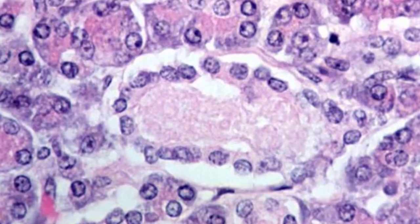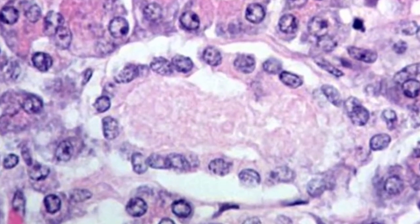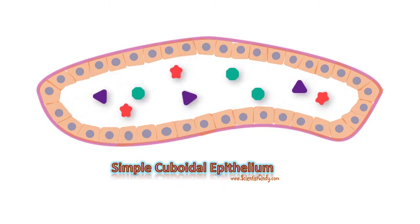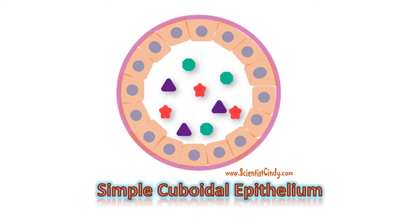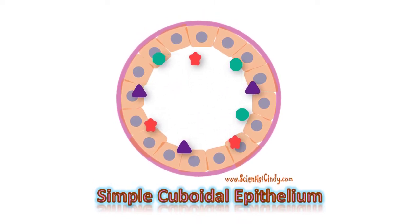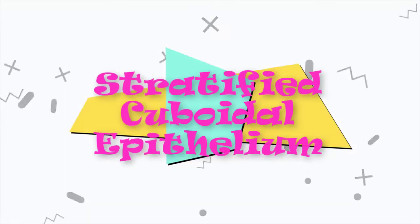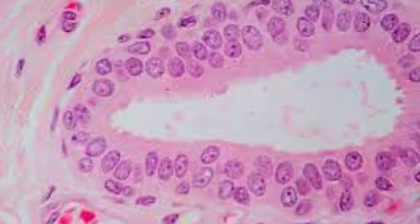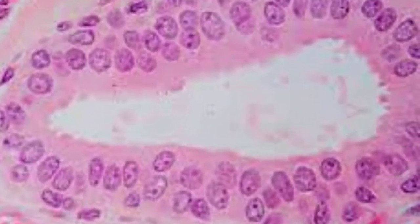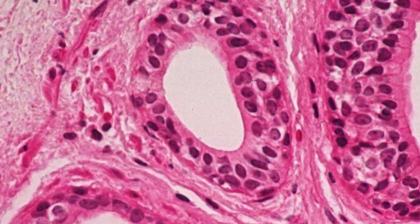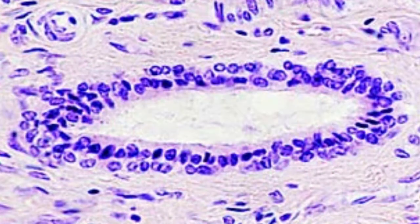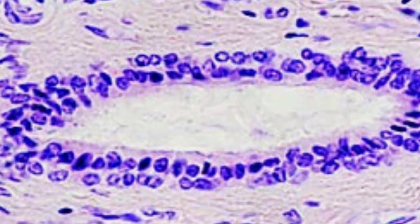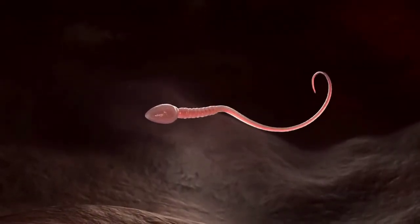This tissue type is specialized for secretion and absorption. Secretion is the process by which substances are released into the surrounding environment, whereas absorption is the taking up of substances from the surroundings or from the lumen. Stratified cuboidal epithelium forms the protective surfaces of some glands, such as sweat glands, mammary glands, and salivary glands. Here we see stratified cuboidal epithelium lining the walls of the seminiferous tubules of the testes, where spermatozoa are first formed.